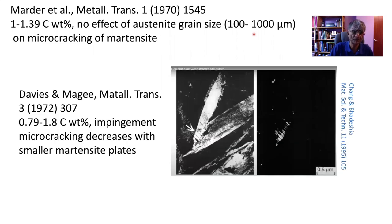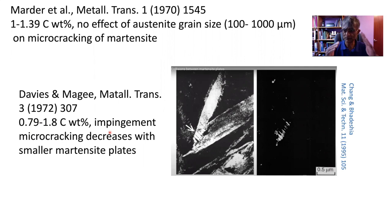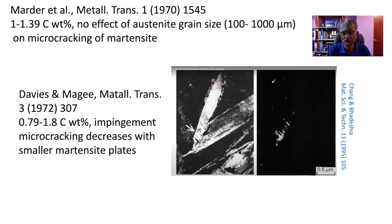A further study by Davies and Magee, again on very high carbon steels of 0.8 to 1.8 weight percent carbon, talked about impingement between plates of martensite. When plates of martensite collide, a system of stresses is created which causes the high carbon martensite to crack microscopically. The observation is that when two plates collide, at the plane of contact mechanical twins are created — some kind of a shock — and if the martensite plates are brittle, they crack.